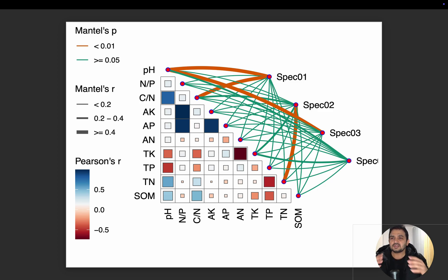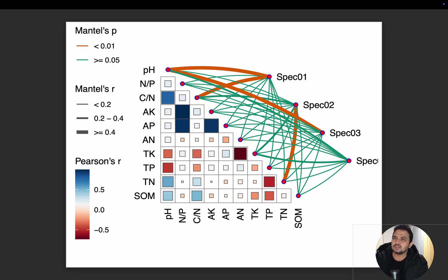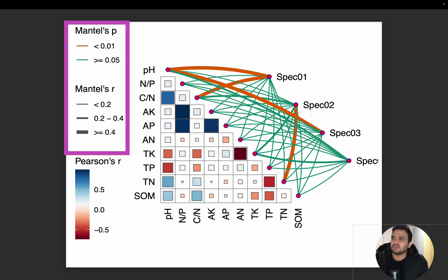Now we have connected two matrices and tried to understand how they are related to each other. This part shows the species data — species one, species two, and species three. This part can be interpreted with two keys: one is the p-value, which tells whether the correlation coefficient is significant or not.